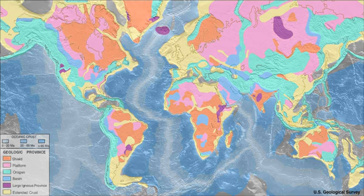Like Earth, Venus lacks primary crust, as the entire planet has been repeatedly resurfaced and modified.